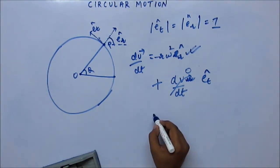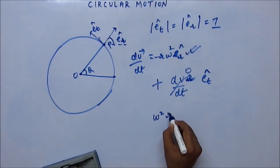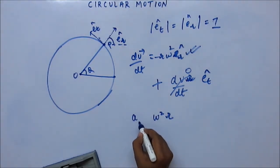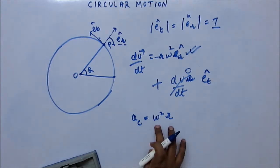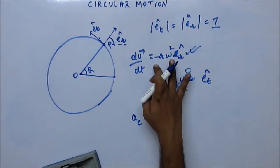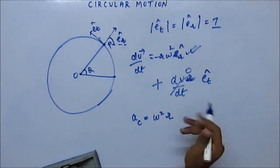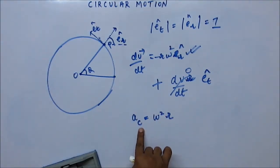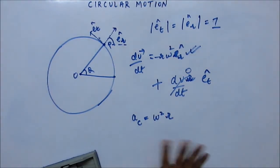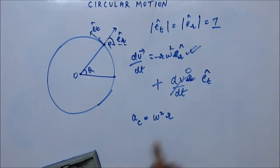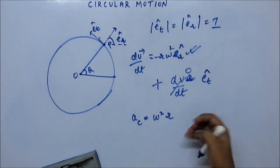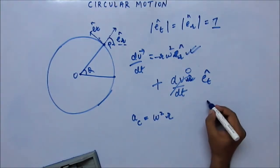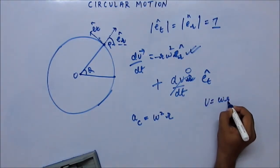Centripetal acceleration is omega squared into r. We are not carrying the minus sign because we know the direction — it is towards the center. There are four important formulas: v equals omega r, tangential acceleration equals r into alpha, and centripetal acceleration equals omega squared r, which you can also write as v squared by r by replacing omega with v by r.